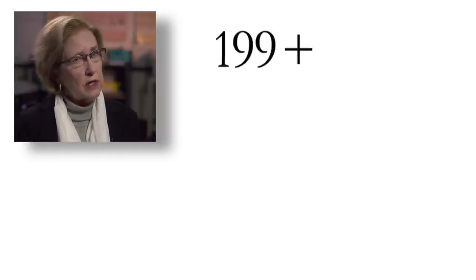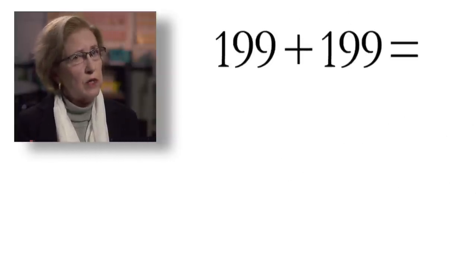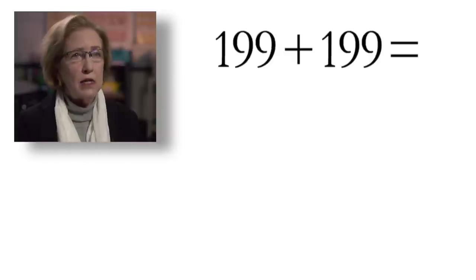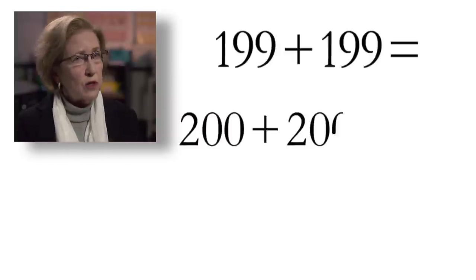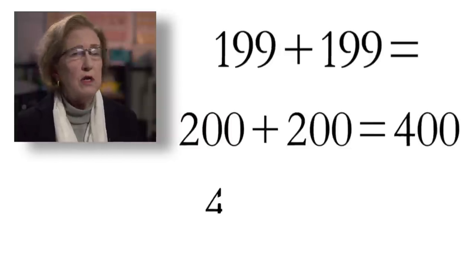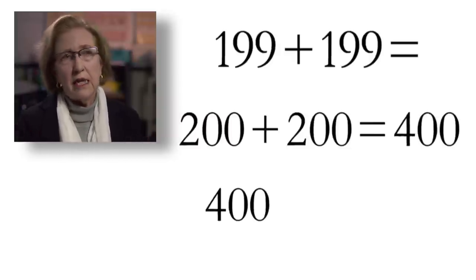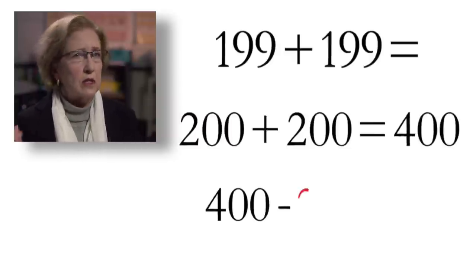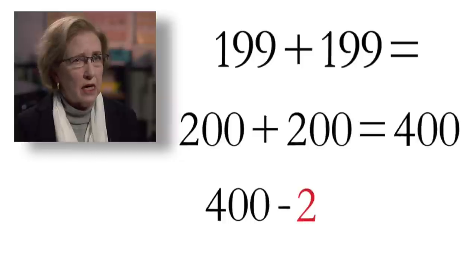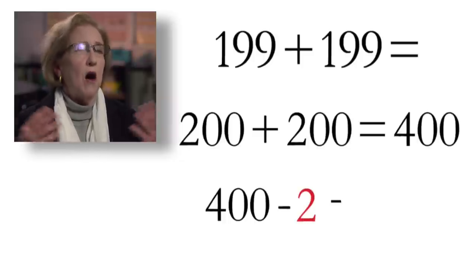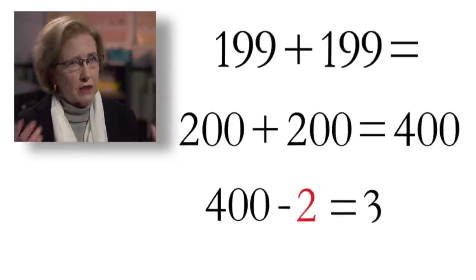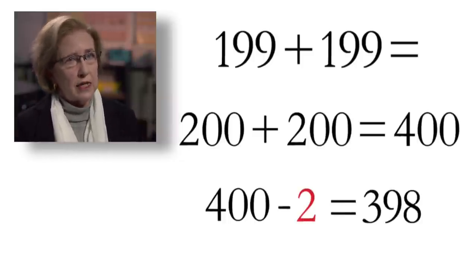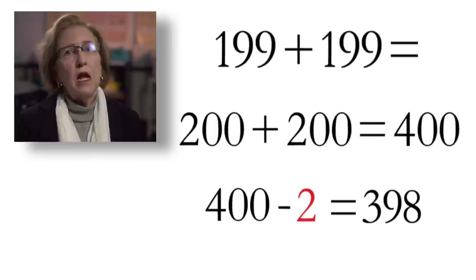Or you can think flexibly: 199 + 199 + 199 + 199. I know 200 and 200 and 200 and 200 is 800, and I need to take away 4 because each is only 199. So the answer is 796. That is the kind of flexibility and thinking that you want to encourage.